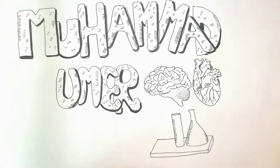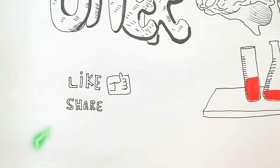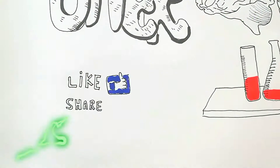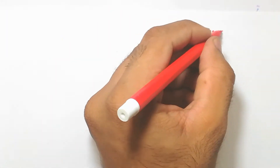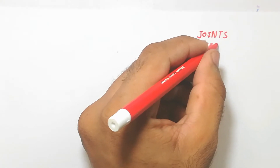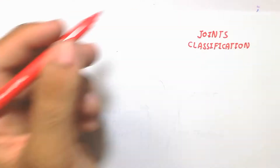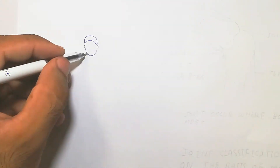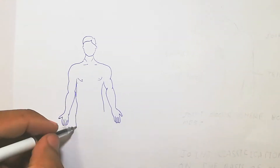Muhammad Umar Farooq biological video, please like and share. In this video we will talk about the joints, their classification and their function. We will discuss about the different types of joints on the basis of movement or on the basis of structure.